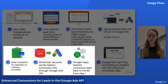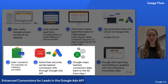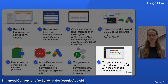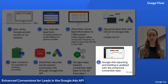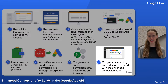With enhanced conversions for leads, you send offline lead conversion data directly and securely from your CRM to Google Ads through the API, so that Google can tie those conversions back to the ad that drove the lead. As a result, Google Ads can report on your offline lead conversions without you needing to store the Google Click ID in your CRM.